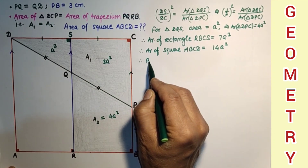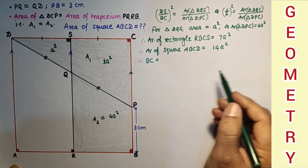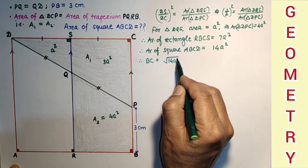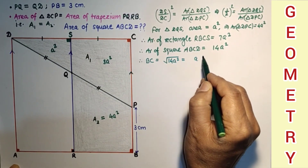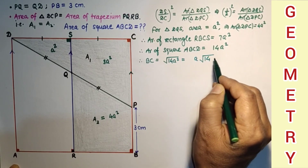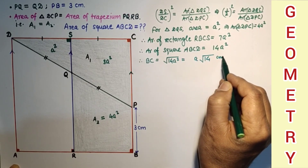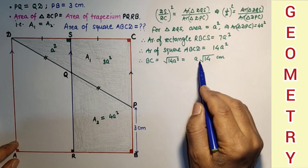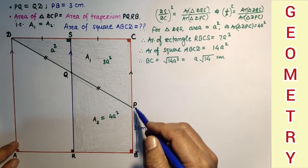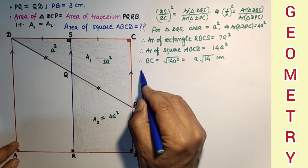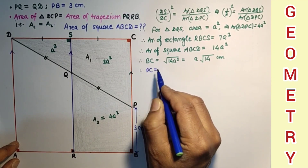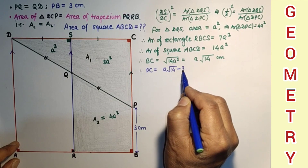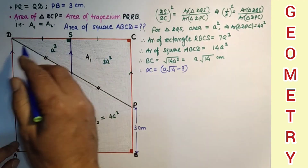So BC side is equal to the square root of 14A squared, that is A root 14 centimeters. Now BC we found is A root 14, and BP is 3, so PC will be A root 14 minus 3.